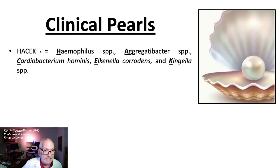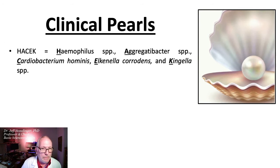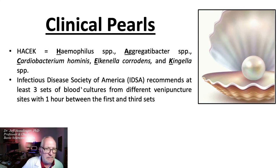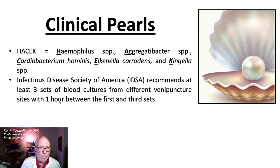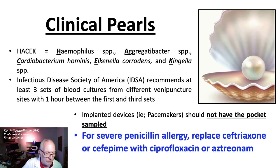And now for some clinical pearls. HACEK is an acronym for Haemophilus species, Aggregatibacter species, Cardiobacterium hominis, Eikenella corrodens, and Kingella species. The Infectious Disease Society of America recommends at least three blood cultures from different venipuncture sites, with one hour in between the first and third sets. Implanted devices such as pacemakers should not have the pocket sampled. For severe penicillin allergy, replace ceftriaxone or cefepime with ciprofloxacin or aztreonam.